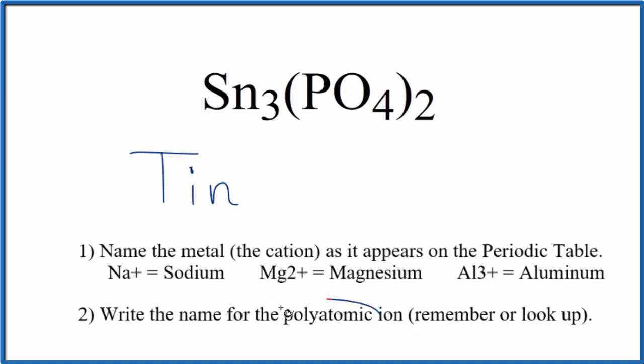Then we're going to write the name for the polyatomic ion. That's the phosphate ion, PO₄. We just write phosphate, lowercase p. So right now, we have tin phosphate for Sn₃(PO₄)₂.